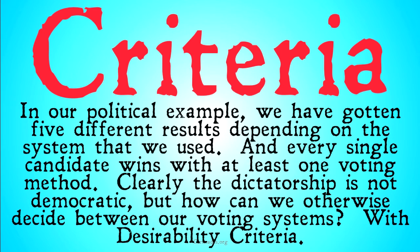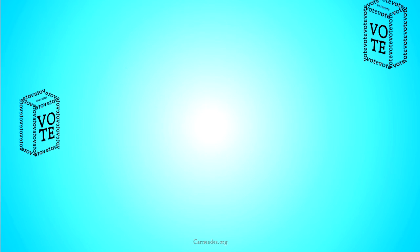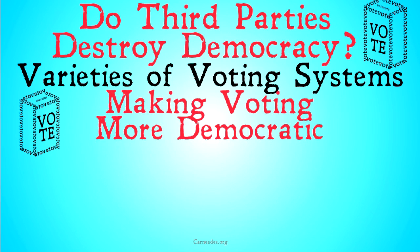Clearly, the dictatorship is probably not democratic. But how can we otherwise decide between our voting systems? Well, we're going to use what's known as desirability criteria. If you want more information on those desirability criteria, keep watching. The series continues with Making Voting More Democratic, where we will look at a set of voting criteria for these voting systems.